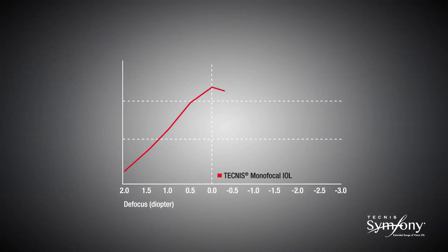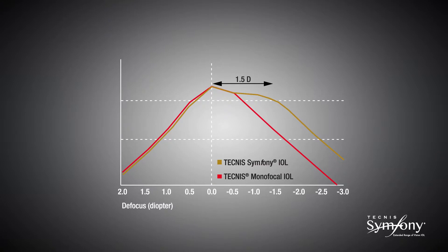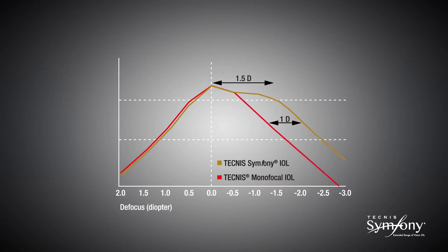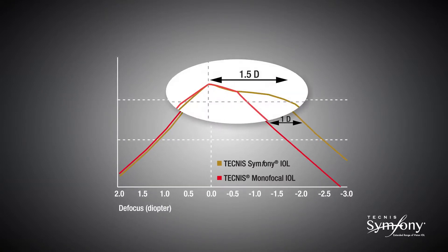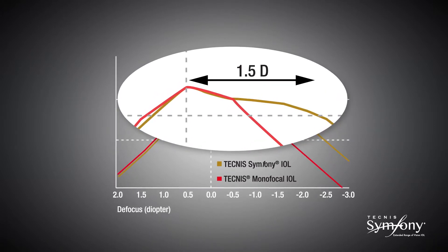Because of its elongated focus, the Technis Symphony IOL delivers high quality vision through 1.5 diopters of defocus and an increase of 1 diopter range of vision throughout the defocus curve compared to a monofocal IOL. The plateau of the defocus curve demonstrates the extended range of vision of the Technis Symphony lens.